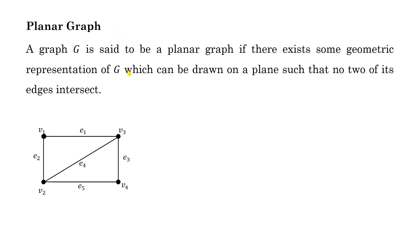In this lecture we will discuss planar graphs. A graph G is said to be a planar graph if there exists some geometrical representation of G which can be drawn on a plane such that no two of its edges intersect. It means if we can draw a graph on a plane so that no two edges intersect with each other, then we say the graph is a planar graph.